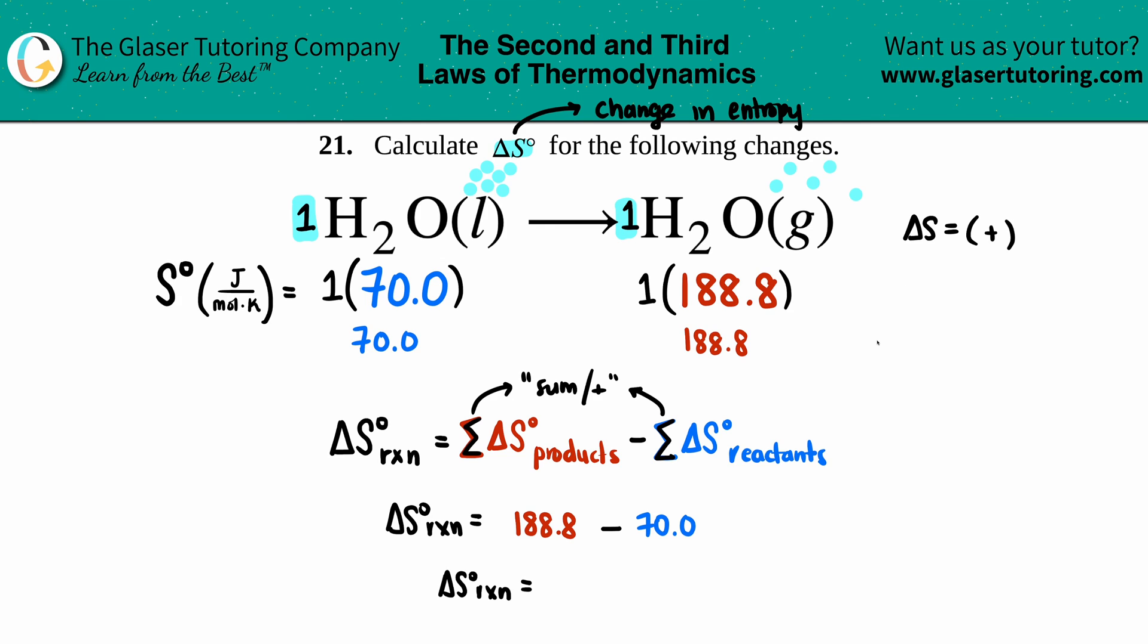188.8 minus 70, I get 118.8. Units are what the units are standard in the back of the textbook, which is joules per mole times kelvin. You could put your slash this way, you could put your slash this way—it means the same thing.